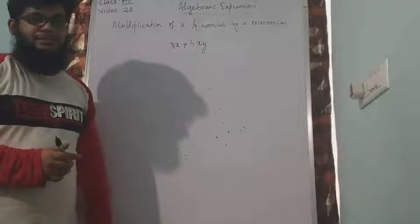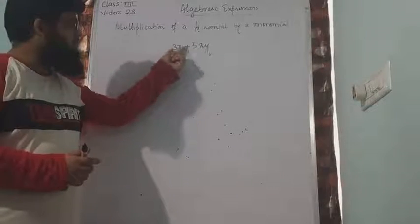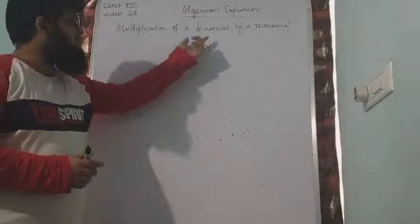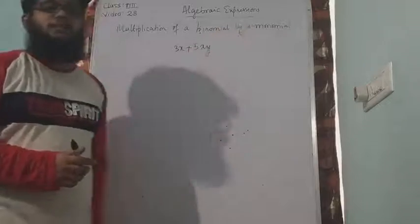So binomial, I have already written an example here on the board: 3x plus 5xy. 3x is one term, 5xy is another term. So these two terms belong to binomial. And I should multiply this binomial from a monomial.